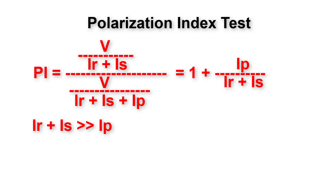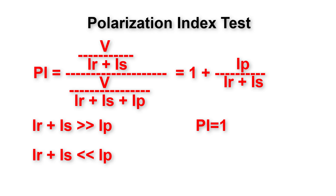When Ir + Is is much larger than Ip, the polarization index approaches 1, which is a poor value. If Ir or Is are large, this indicates unhealthiness of the insulation. Conversely, a high polarization current Ip compared to Ir and Is indicates a healthy insulator.